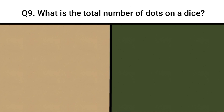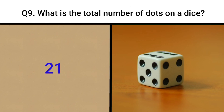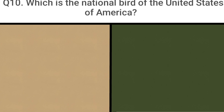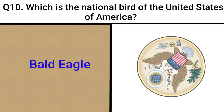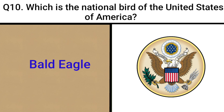What is the total number of dots on a dice? 21. Which is the national bird of the United States of America? Bald eagle.